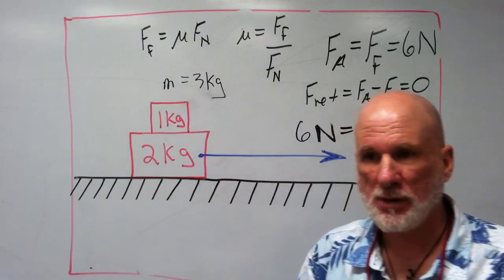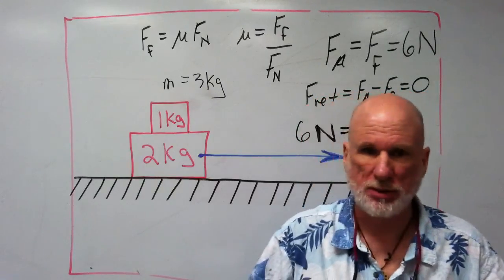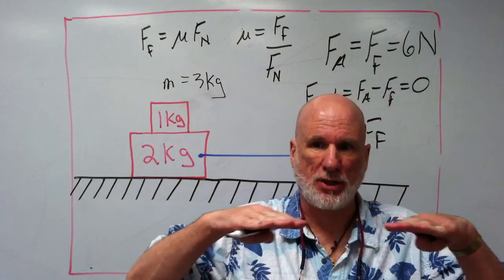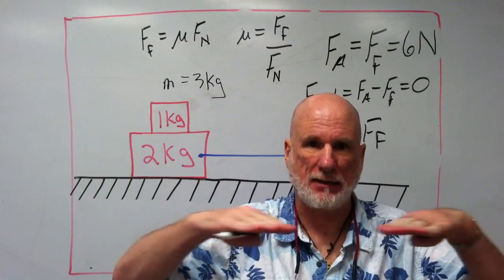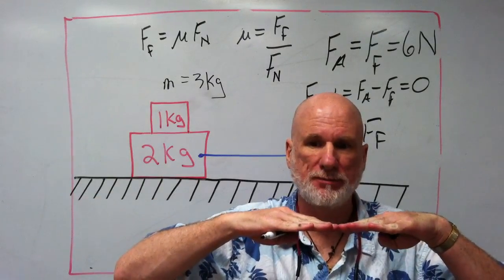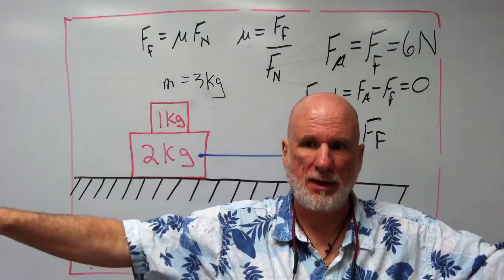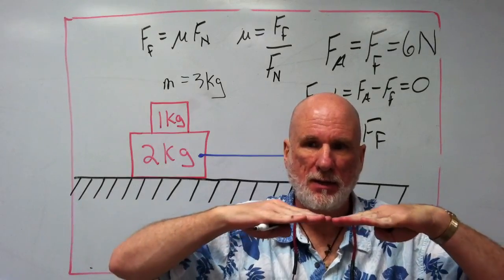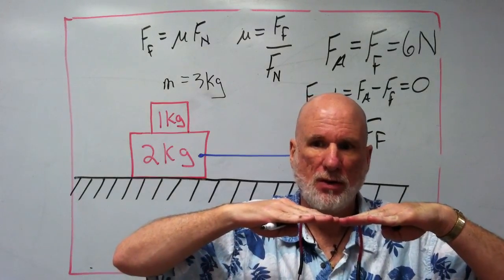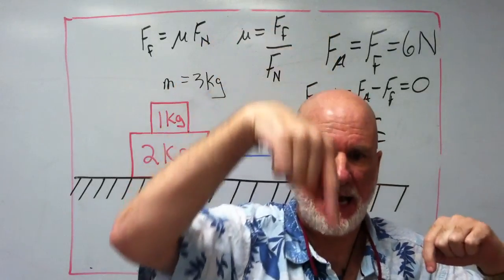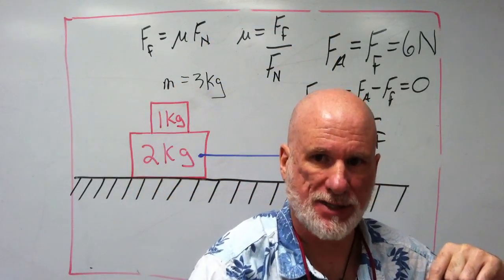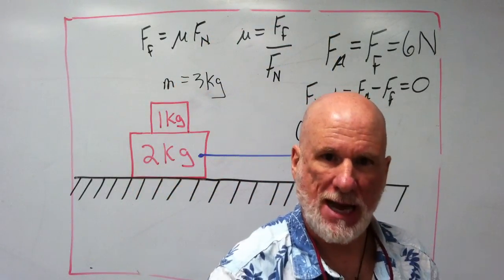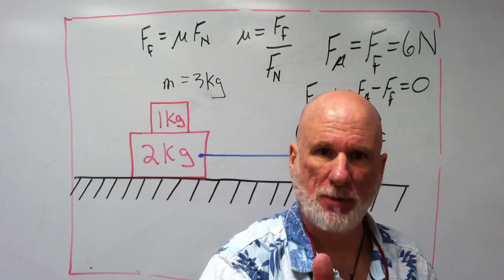Now, on a horizontal plane - a table or floor - the force down is the weight. The force up is going to be the normal force.